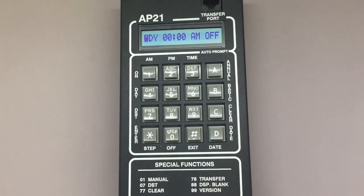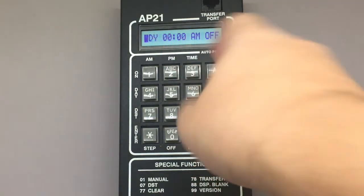In this example, I'm going to program for school zone flashers, which I don't want to turn on over the weekend. So I'm going to scroll back to WDY, which represents weekdays.